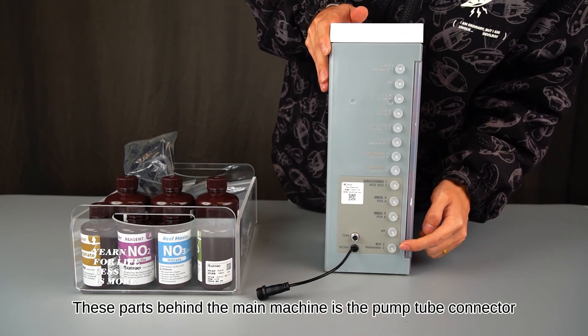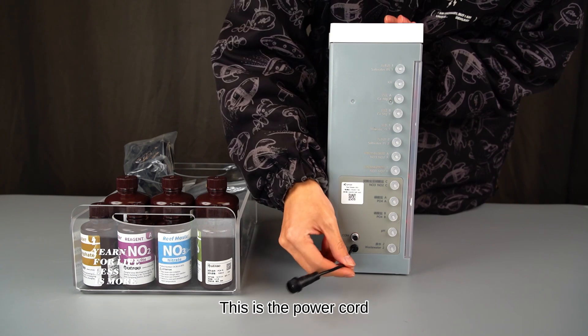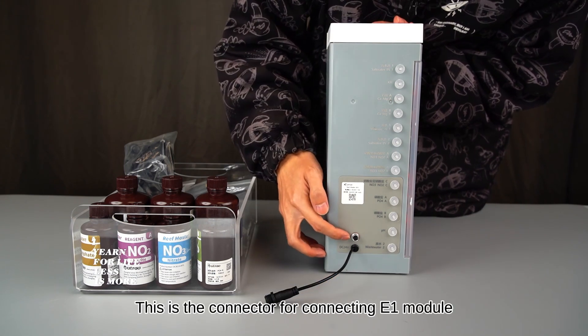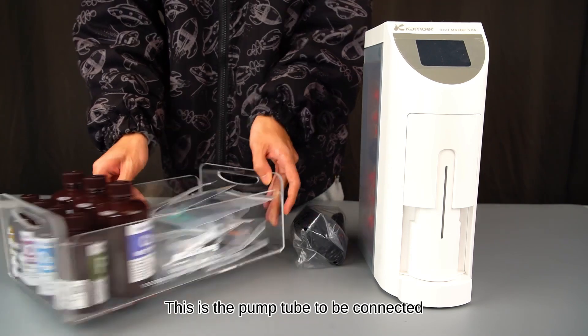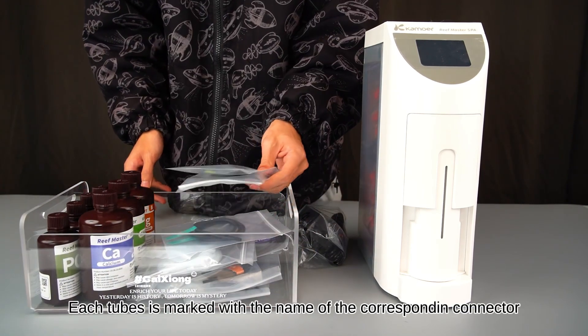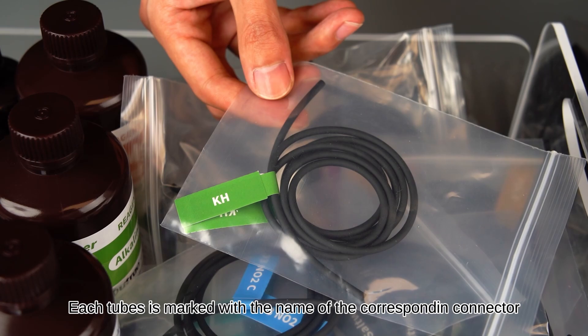These parts behind the main machine is the pump tube connector. This is the power cord. This is the connector for connecting E1 module. This is the power adapter. This is the pump tube to be connected. Each tube is marked with the name of the corresponding connector.